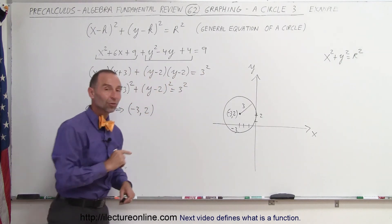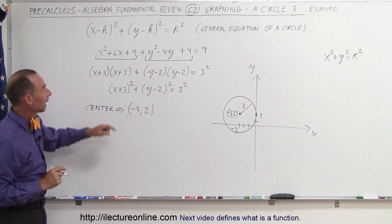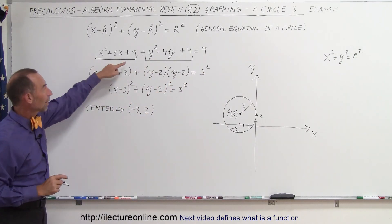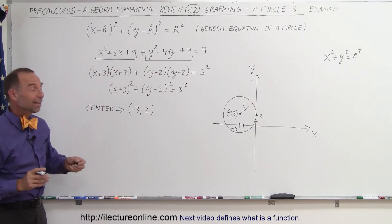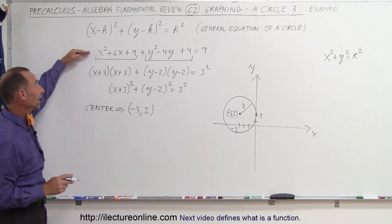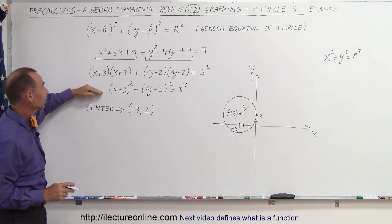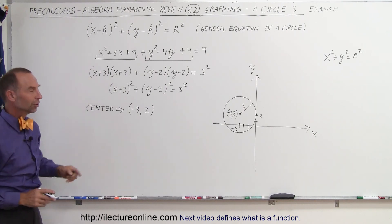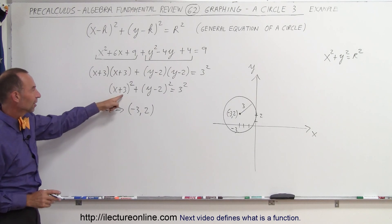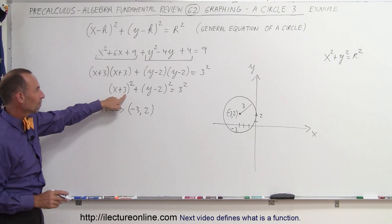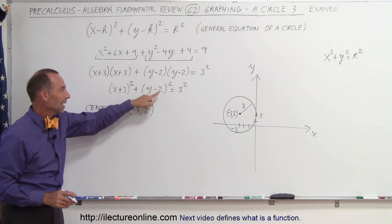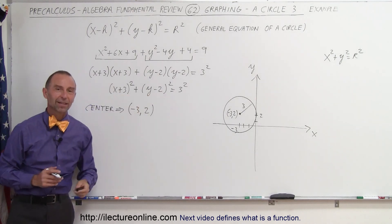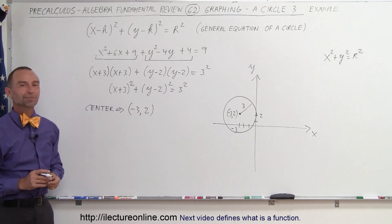And that's the circle represented by this equation. Even though at first sight it doesn't look like it, if you can make it look like this in the general format, you have a circle with center at (−3, 2). And that's how we do that.